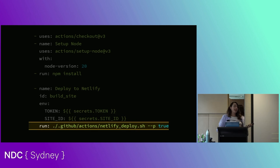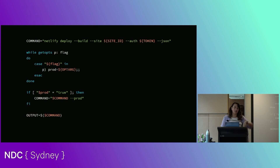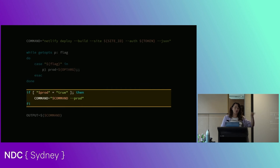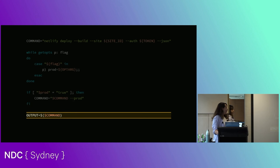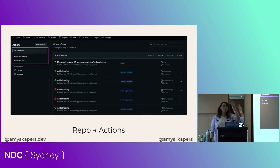We set up a build job with checkout, setup Node, npm install, and deploy to Netlify — passing in tokens and site ID same as before, but this time passing in a production flag 'p=true'. In the deploy script, after setting the command, if the production flag is set we append Netlify's production flag to the command, otherwise it just does a deploy preview. Once this is set up, I now have two GitHub Actions workflows in my repo: 'build and test' and 'build and publish', each triggered by different criteria.